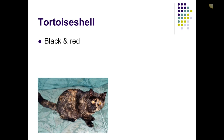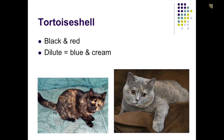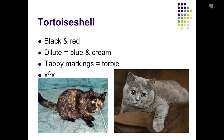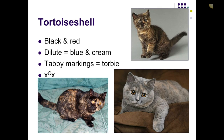Tortoiseshell cats are black and red, and tortoiseshell cats are female cats. There are rare instances of them being male, but it's a genetic abnormality — the cat ends up being XXY, with one too many sex chromosomes, and they are sterile. We have a regular tortie and a dilute tortie, which is blue and cream — that's the dilution of the orange and of the black. Sometimes they'll have little tabby markings as well, and people tend to call those torbies. A tortie would be X-O, X chromosome genotype.